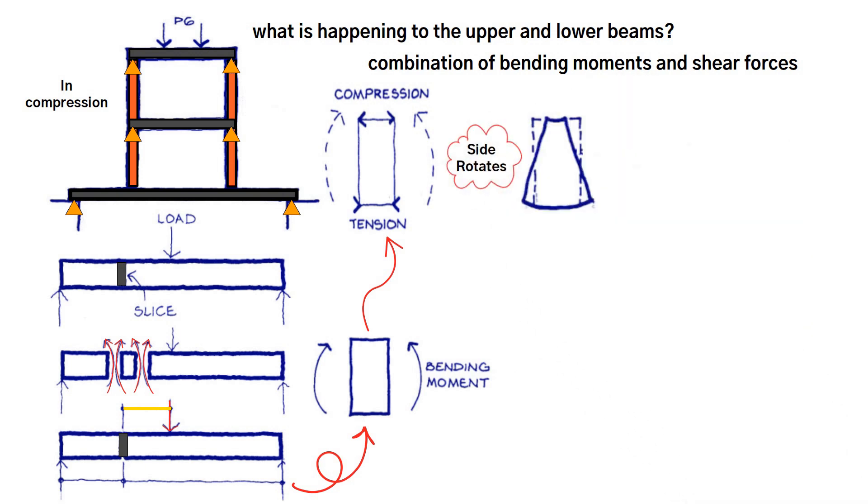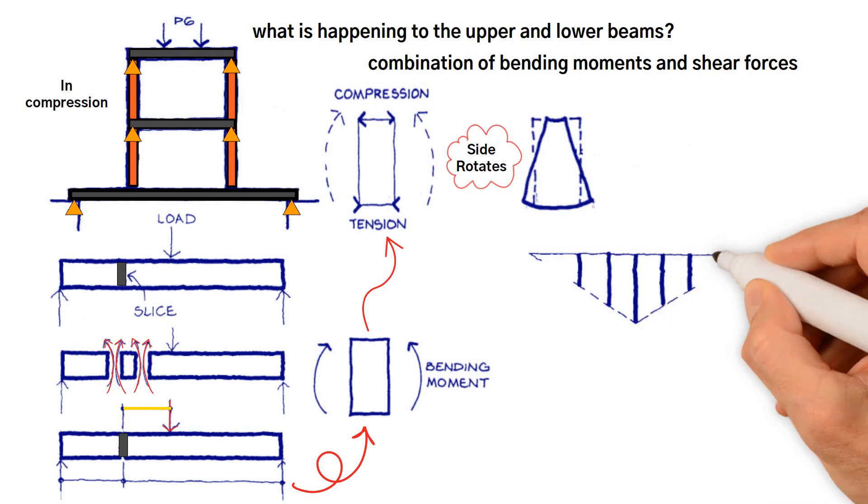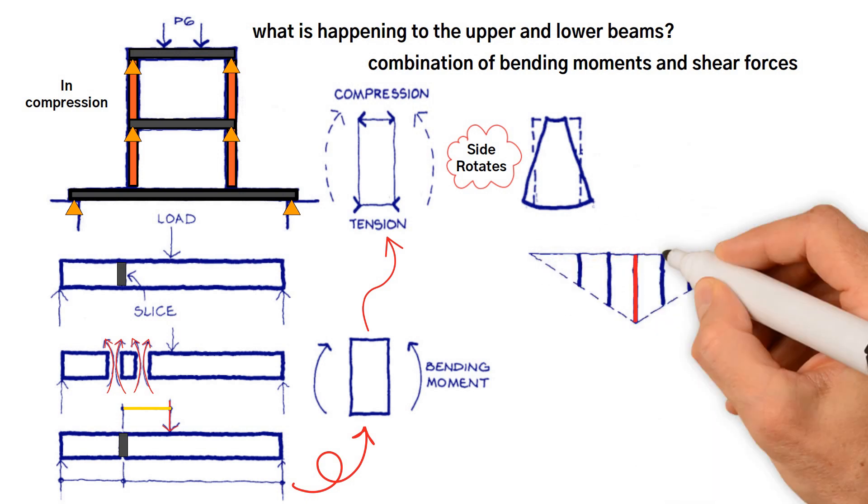In general, the size of the bending moment varies from slice to slice. This varying size can be represented by drawing lines at right angles to the beam, with the length of the line indicating the size of the bending moment.